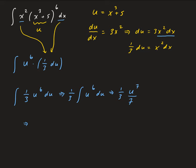So we can actually go ahead, and we have 1/3 times 1/7. So that's going to give us 1 over 21 times u to the 7th power.